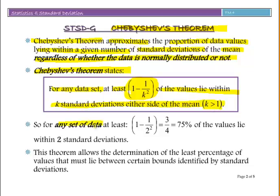So for any set of data, at least 1 minus 1 over 2 squared, which equals 3 over 4 or 75% of the values lie within 2 standard deviations. Note that the 2 represents k equals 2, which is 2 standard deviations.